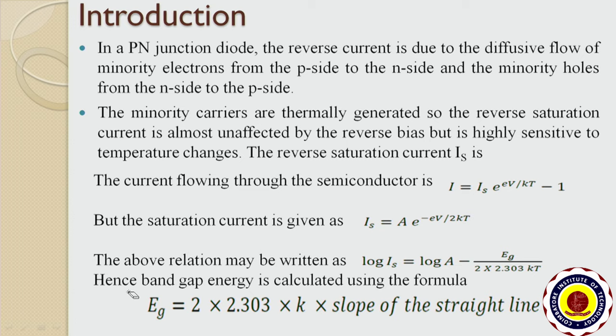The reverse saturation current flowing through the semiconductor is governed by the equation: I = Is · e^(eV / 2kT) − 1. The saturation current is given as: Is = A · e^(−Eg / 2kT). This relation may be written as: log Is = log A − Eg / (2 × 2.303 × k × T). Hence, the band gap energy is calculated using the formula: Eg = 2 × 2.303 × k × (slope of the straight line).